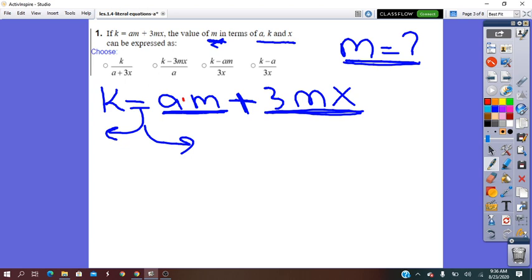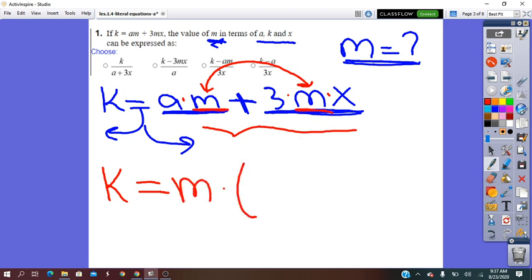Between a and m, the operation is times. Between 3 and m times, and m and x is times. So we cannot combine, but we can very easily observe that m is a common factor in the terms. So then the expression, we can factor it. So we will write k equals, the common factor is m, we will take it outside, times.